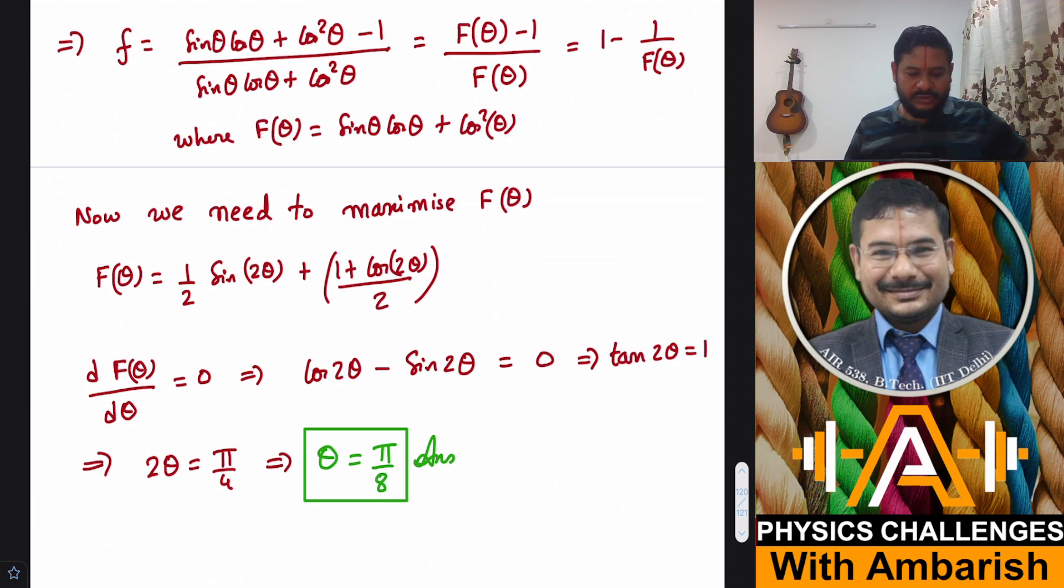F of theta is half sine 2 theta. Half sine 2 theta becomes what? 2 theta is pi by 4, so this becomes sine of pi by 4, which is 1 by root 2. This becomes 1 by 2 root 2, and then cos of 2 theta also becomes 1 by root 2. Then you can simplify and solve. I have not done that, but that's trivial.